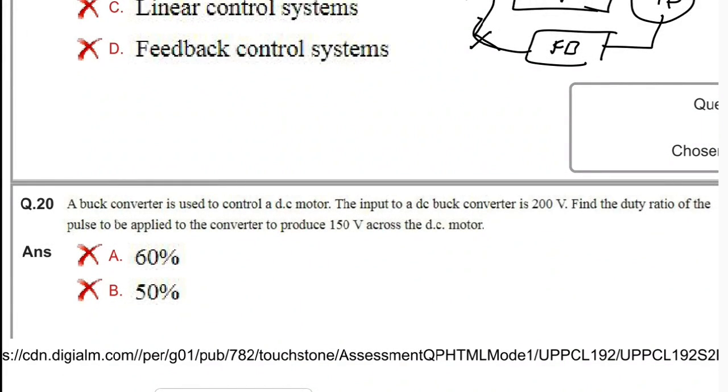Next question: a buck converter is used to control a DC motor. The input to the buck converter is 200 volts. Find the duty ratio of the pulse applied to the converter to produce an output of 150 volts. We need to find the duty ratio.